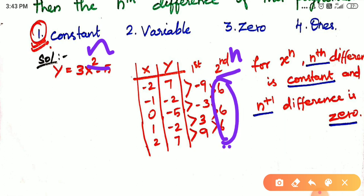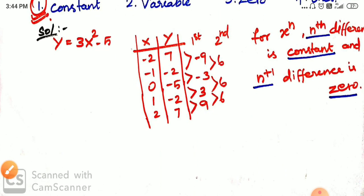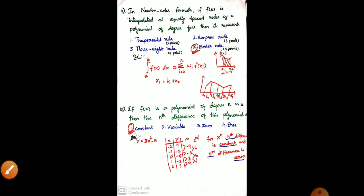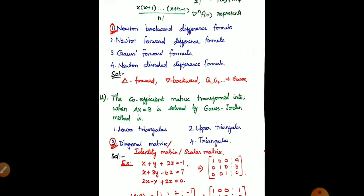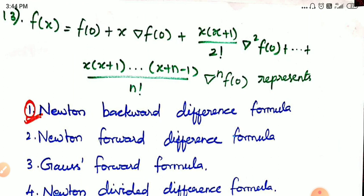So what is the n+1 difference? 6 minus 6 is 0. So the n+1 difference is 0. If n is constant, n+1 difference is 0. I told you about this concept. If you learn how to do it without the concept, we will learn how to approach it. Let's finish the concept.